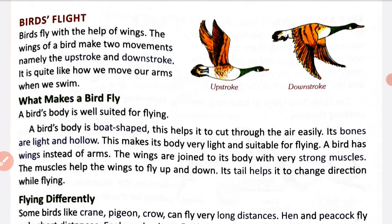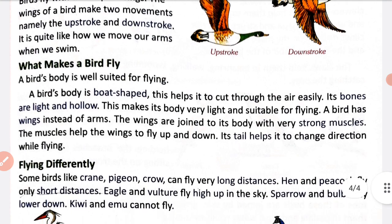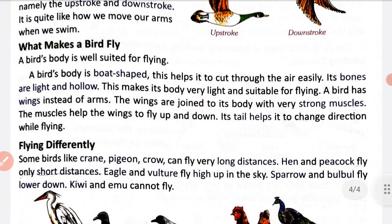What makes a bird fly? A bird's body is well suited for flying. Jo bird ki body hai wo aise bani hoti hai jo udne mein unko perfect banati hai. A bird's body is boat shaped, and this helps it to cut through the air easily. Jab yeh udte hain to inki body ki shape inki help karti hai air ko cut karke aage ki aur udne mein.